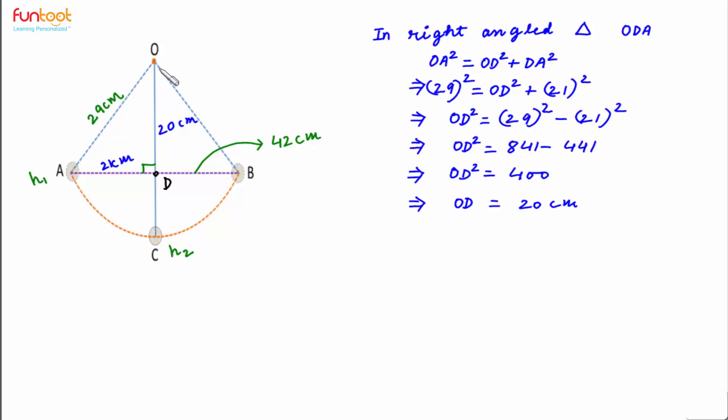Now as discussed, we have to find DC, and DC will be OC minus OD. So DC will be 29 centimeters minus 20 centimeters is equal to 9 centimeters.